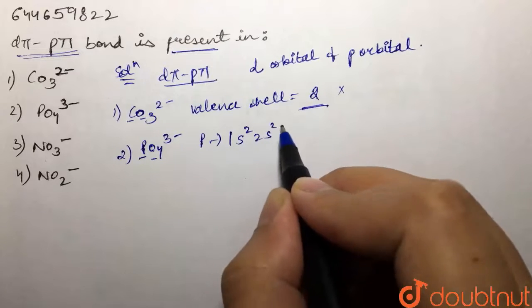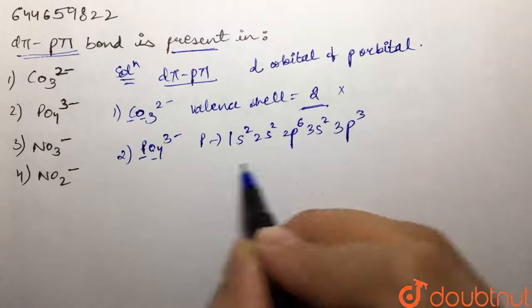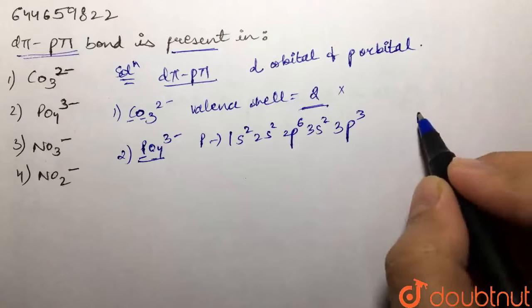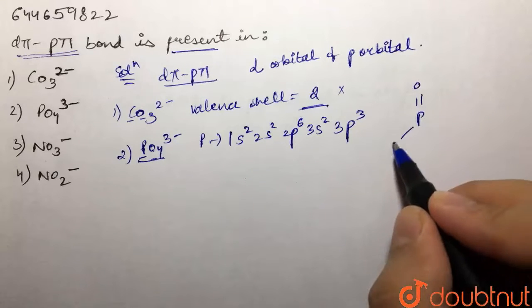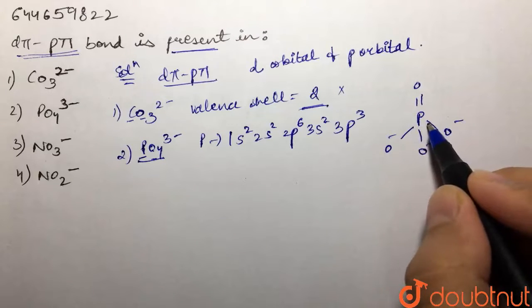Now, what is the structure for phosphate ion? We have P double bond oxygen, then we have O⁻, O⁻, and O⁻. Because phosphorus belongs to nitrogen family, has 5 valence electrons, and it is making 5 bonds over here.